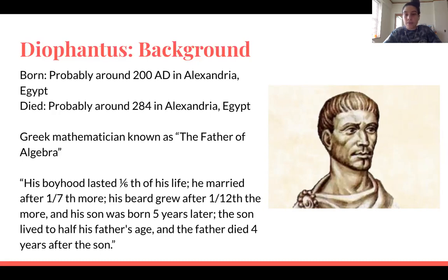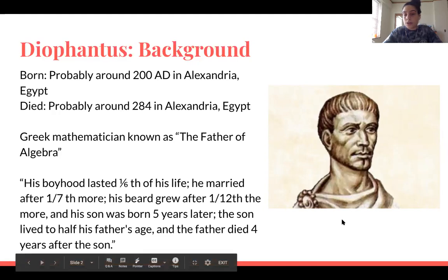And then people also determined that he was married around the age of 26, and he had a son who died around the age of 42, four years before Diophantus himself died around the age of 84. But again, we don't really know a lot about his early life. We only know about his contribution to mathematics. And then right here is just a picture of what Diophantus may have looked like at that time.